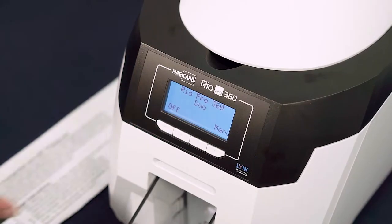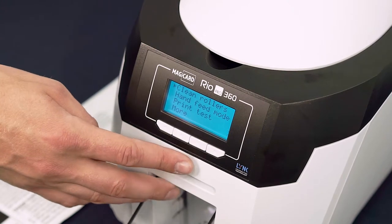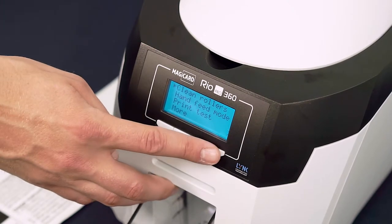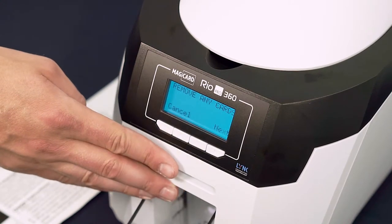First, make sure the home screen is on the display and click menu. This will be the right hand button under your display. Select clean rollers by clicking next.